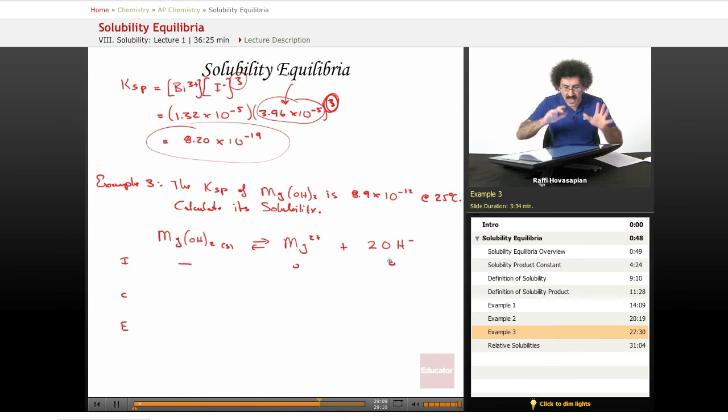As it comes to equilibrium, as some of this dissolves, a certain amount is going to dissolve. That's minus x. For every x that dissolves, x of this shows up. So this is going to be plus x. For every x of this that dissolves, it produces two hydroxide, so this is 2x.